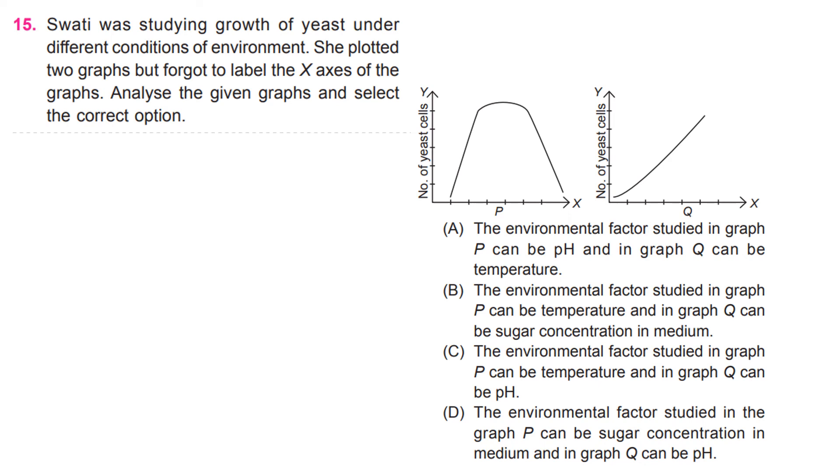Swati was studying growth of yeast under different conditions of environment. She plotted two graphs but forgot to label the X axes of the graphs. Analyze the given graphs and select the correct option. B, the environmental factors studied in graph P can be temperature and in graph Q can be sugar concentration in medium.